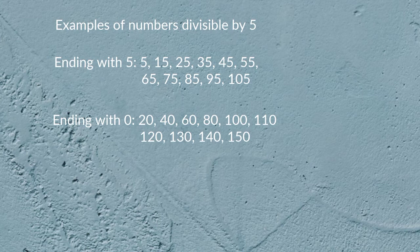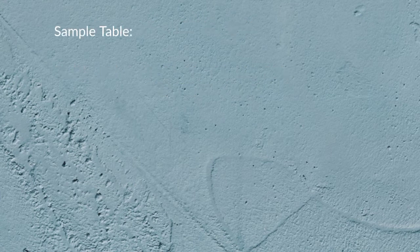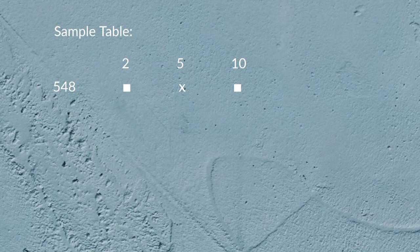Examples of numbers divisible by 10, ending with 0: 10, 30, 90, 100, 200, 500, 520, 670, 850.